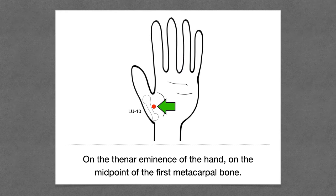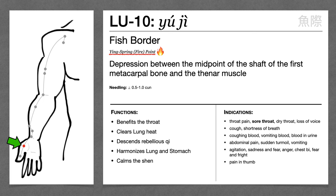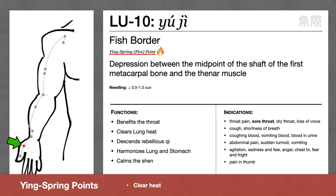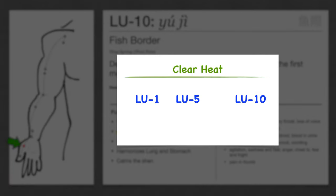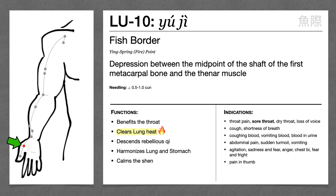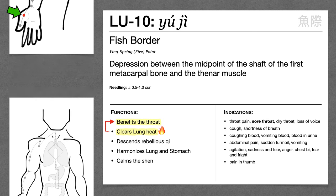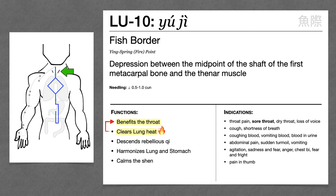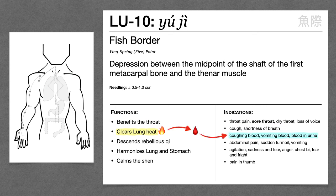Lung 10 is on the thenar eminence of the hand at the midpoint of the first metacarpal bone. Lung 10 is the Ying spring and fire point on the lung channel. Ying spring points are good for clearing heat, so Lung 10 clears lung heat — both excess heat and deficiency heat. If we wanted to differentiate, Lung 1 and Lung 5 are better for heat combined with phlegm, whereas Lung 10 is better for just heat. One major application is that Lung 10 benefits the throat — the lung channel ascends to the throat, so by clearing heat, Lung 10 treats sore throat, dry throat, or voice loss. Lung 10 can also treat bleeding conditions due to heat, such as coughing up blood or vomiting blood.